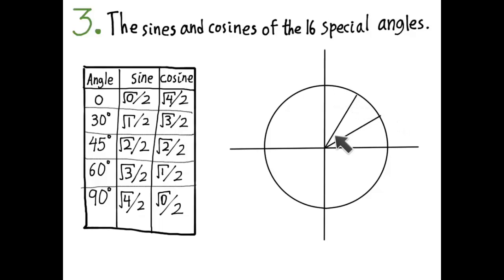For example, if you divide the right angle into thirds, you get angles in radians: τ/12, τ/6, and τ/4 — you might know these as π/6, π/3, and π/2. Looking at the unit circle diagram, the y-coordinate of the point at τ/12 is 1/2 and the x-coordinate is √3/2, so sine of τ/12 is 1/2. Similarly, the sine of τ/6 is √3/2.